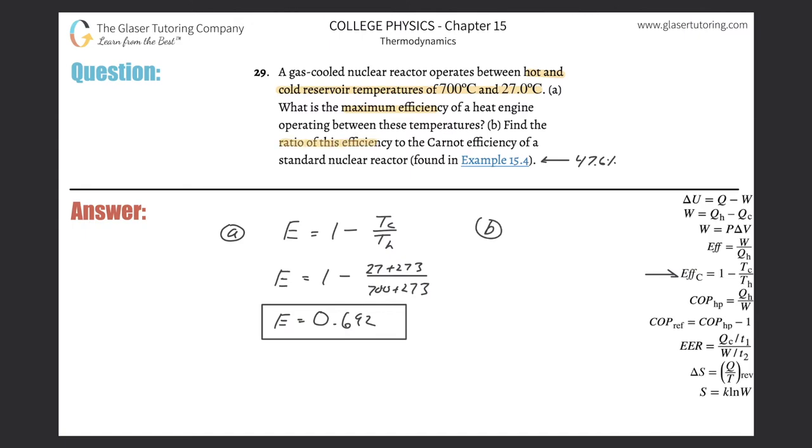It says find the ratio of this efficiency to the Carnot efficiency of the standard nuclear reactor. This is the value from that problem. All you basically have to do is take the ratio. So we'll do the efficiency of the engine we just found, 0.692, divided by the efficiency of the Carnot engine in that example. Remember, you have to be consistent so this also will be in decimal form. You could have done them both in percent form as well. It doesn't matter because it's a simple ratio, but you got to keep it consistent.